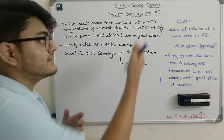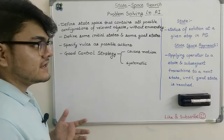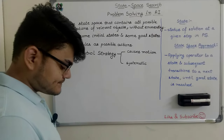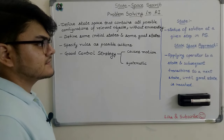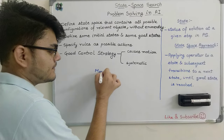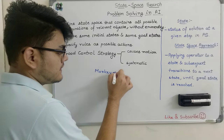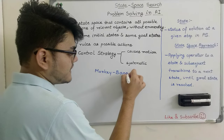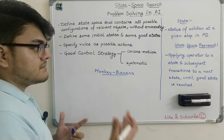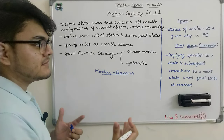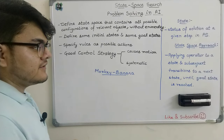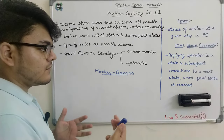We are trying to implement problem solving in AI using the state space search technique. Before moving on to this technique, I just want to give a very simple problem which is also known as the monkey banana problem. It is a very simple problem for humans to solve, but in Prolog an artificial intelligence program will be able to solve this problem, and it really looks very great how AI can solve a real-life problem.